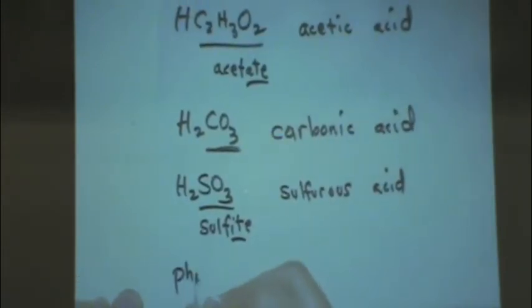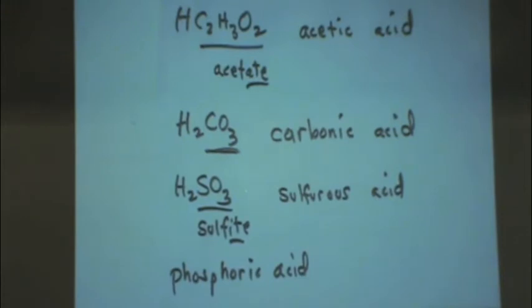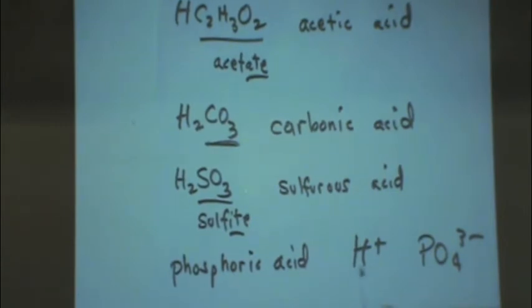So if you saw, for example, we gave you the name and we wanted the formula, we gave you phosphoric acid. Without the hydro there, you're automatically thinking phosphoric is talking about a polyatomic. Ic means it came from an ate. So that's from a phosphate. So to go backwards, you would say, oh, phosphate PO4 three minus. This is going to go with an H plus to make an acid. I need three H pluses, so it would be H3PO4.